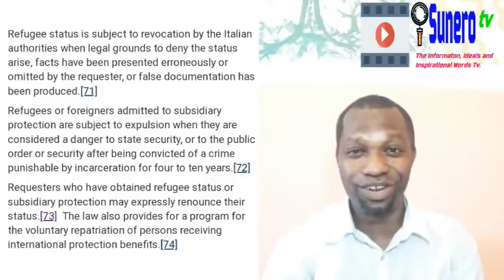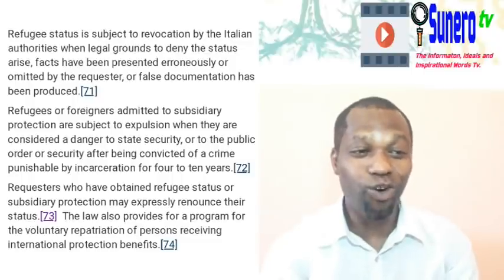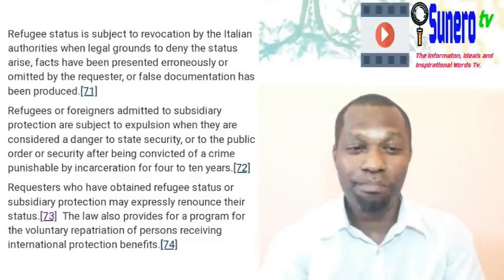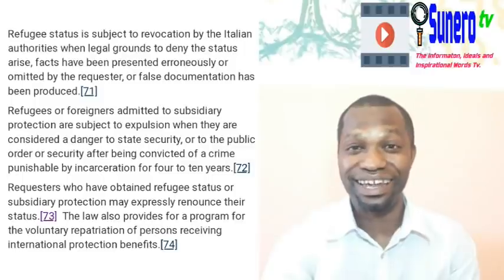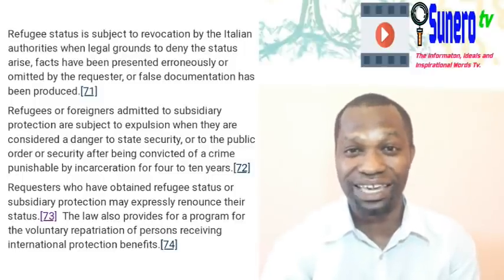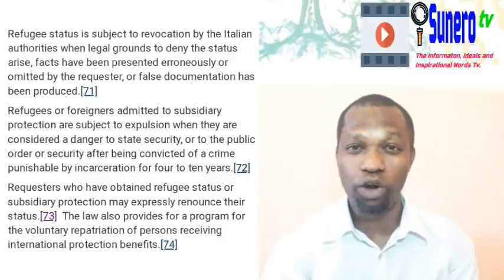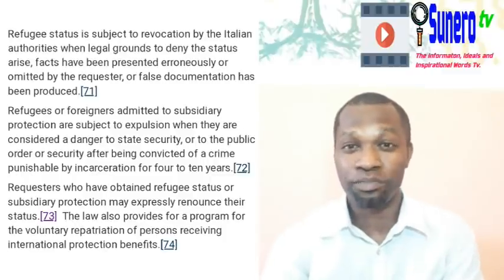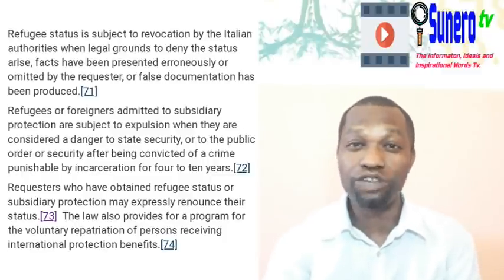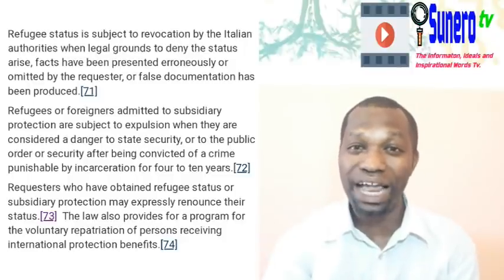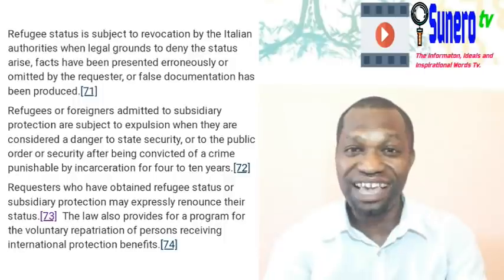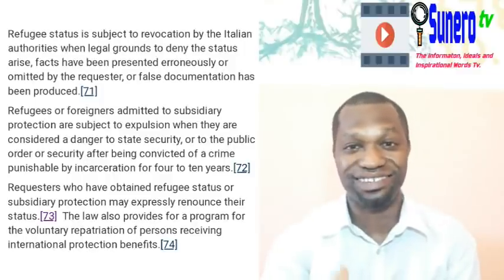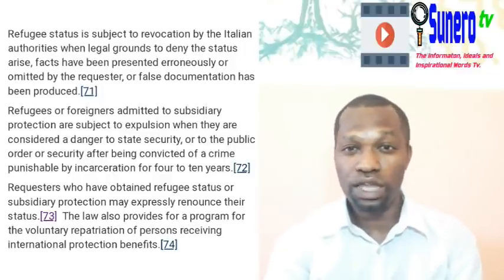Maybe the commission finds out that every statement the person made was based on erroneous information, or there were omissions and false documentation. So on that ground, the commission can revoke the document even after two or five years — they revisit the case every time. Don't think they have given it to you forever. Make every possible effort to quickly change that document, even from five years.